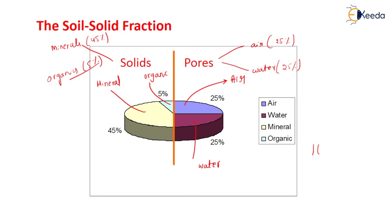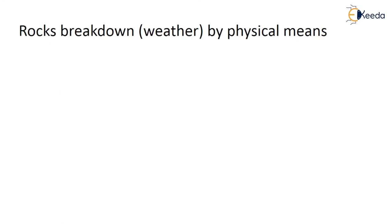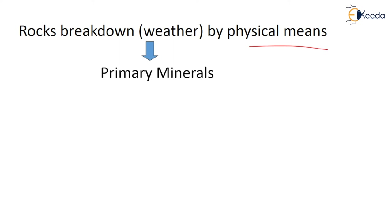Rocks break down - how they break down with the help of weathering by physical means. Generally rocks will get broken down due to the natural phenomenon of weathering. After rocks break down with the help of weathering or by physical means, there may be some other minerals which are formed. Those minerals are known as primary minerals - the rocks which break down further with the help of weathering by physical means.